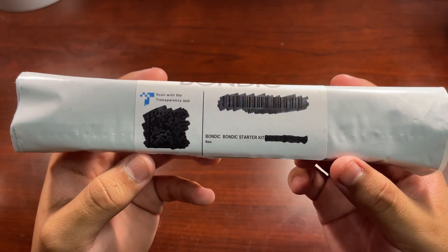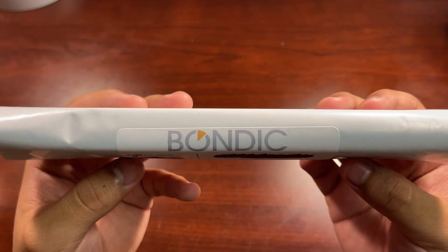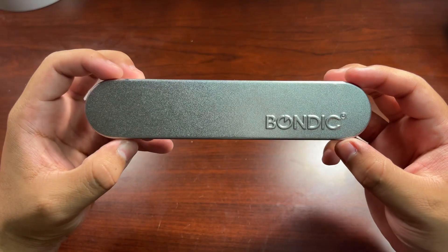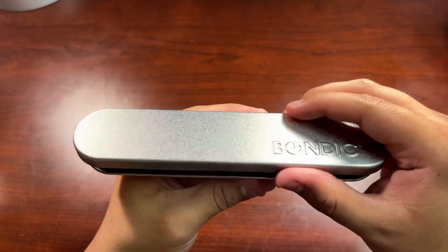So this plastic welding kit was something I bought off of Amazon and is made by this company called Bondic. I hope I'm pronouncing that right. I really wanted to test this product and see if it was legit. The kit comes in this little aluminum container that has everything you need inside it.